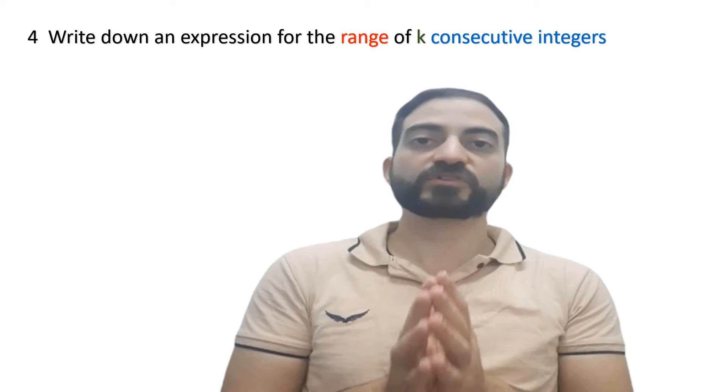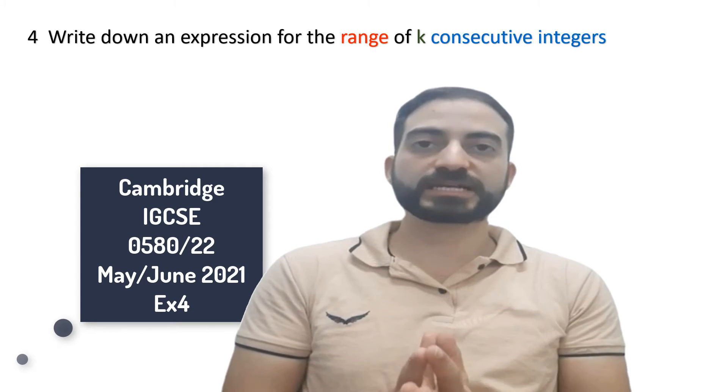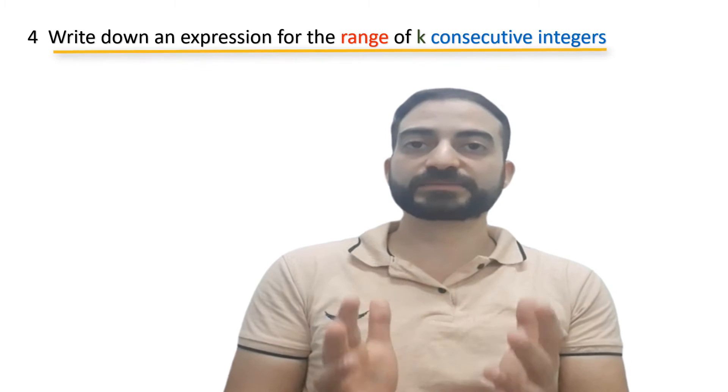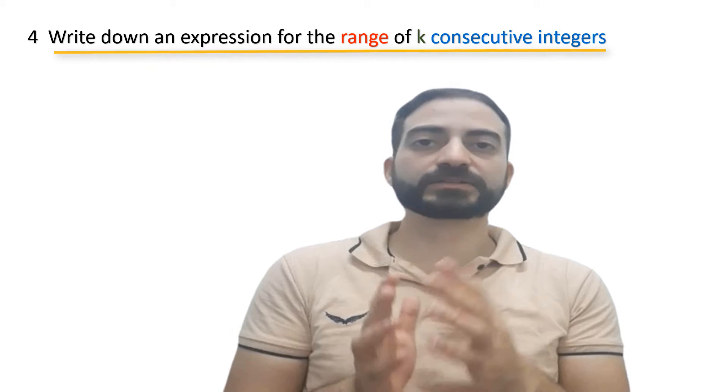Hello everyone, in this video we will solve the fourth question of the Cambridge IGCSE 2021 competition. We are asked to write down an expression for the range of k consecutive integers.